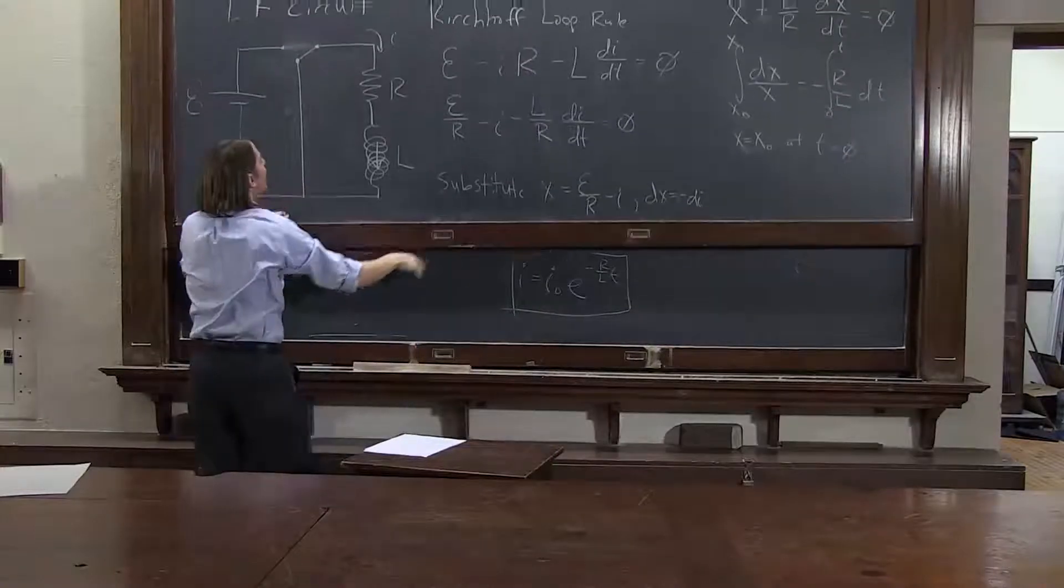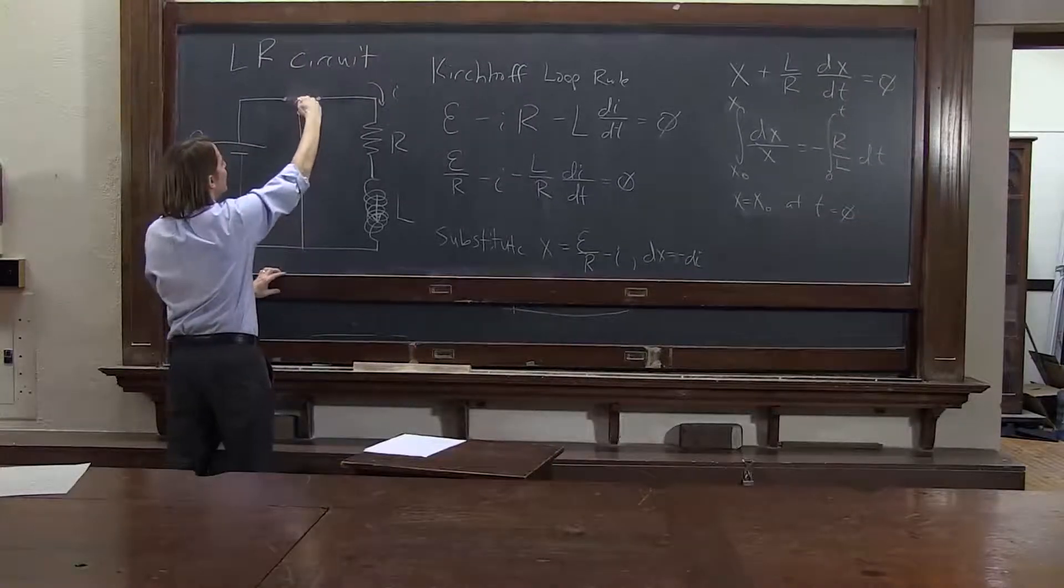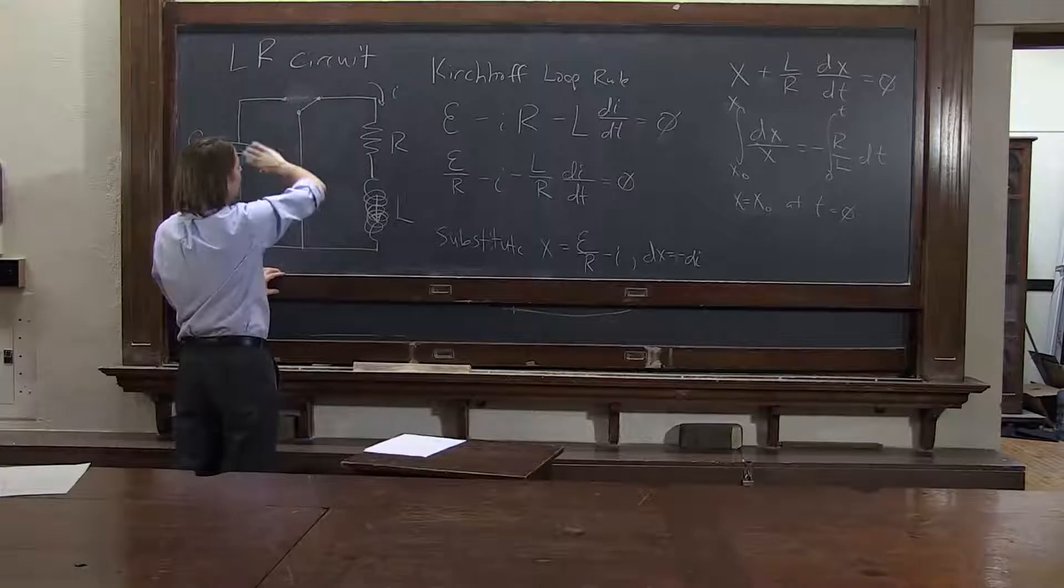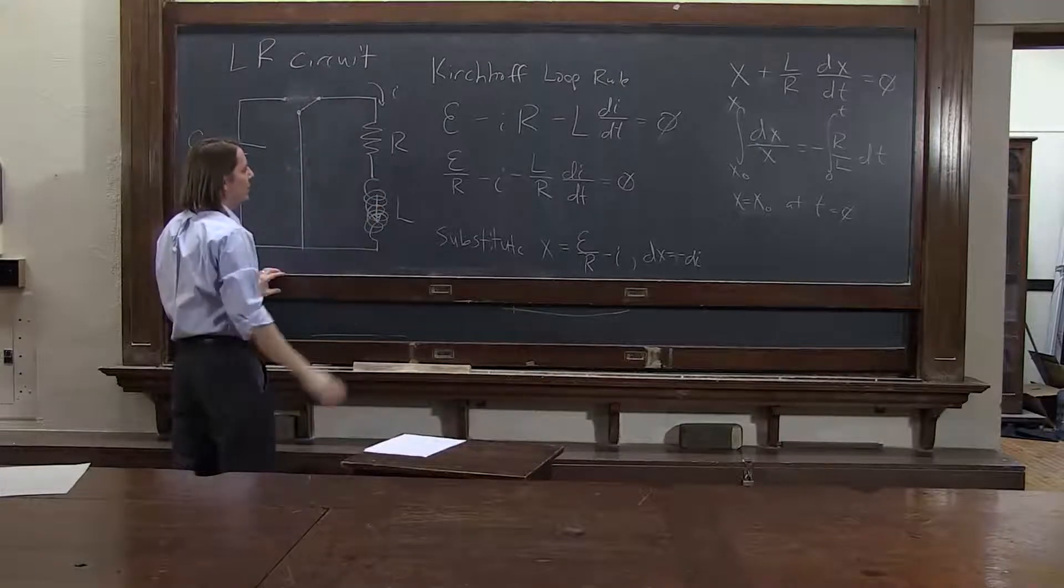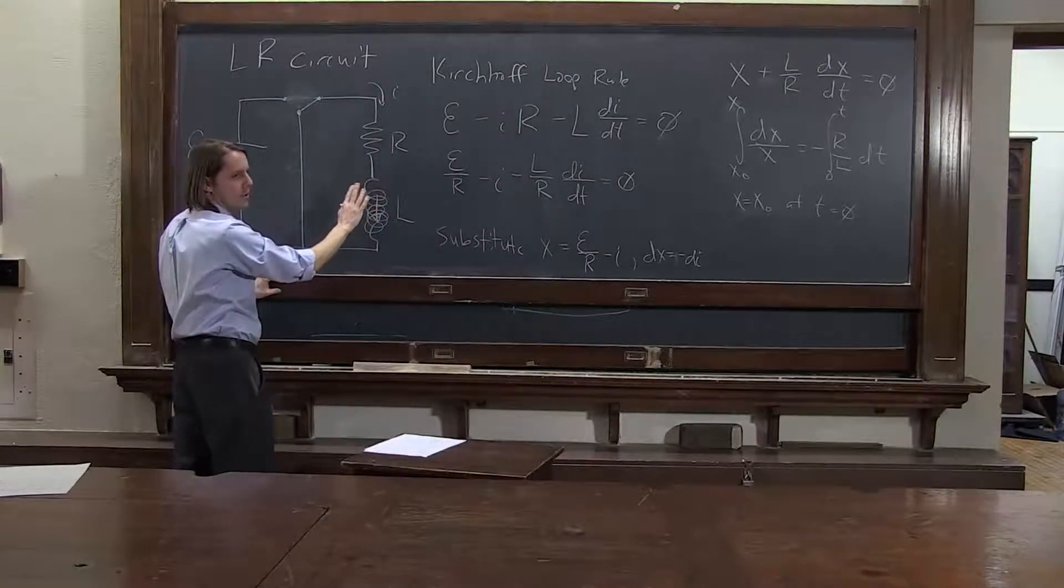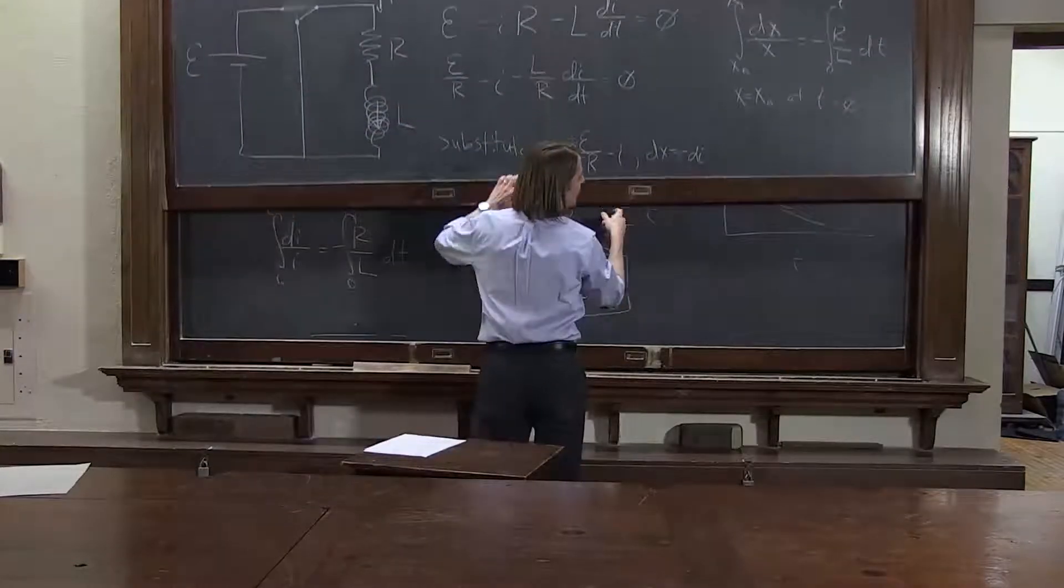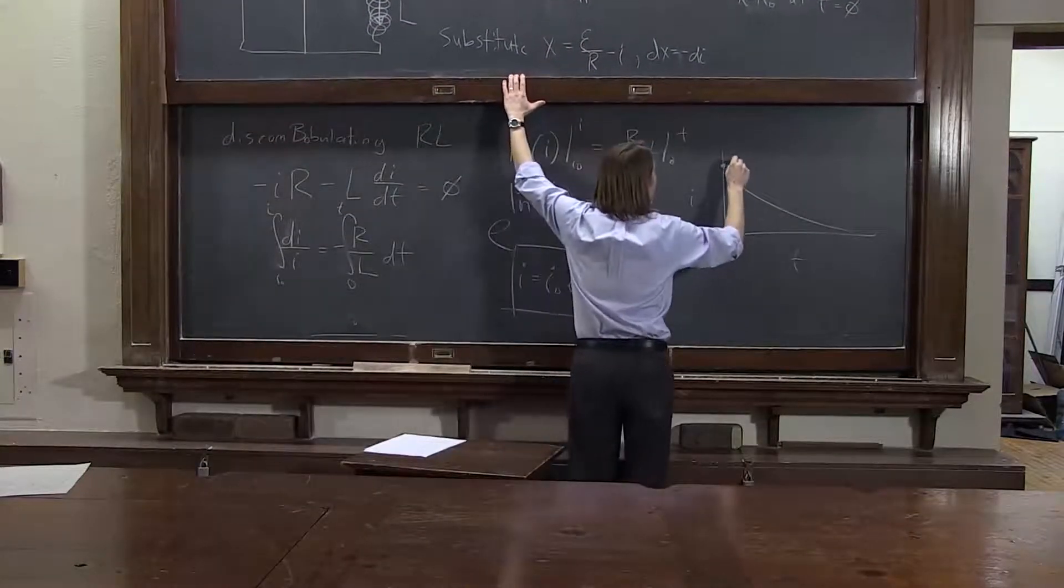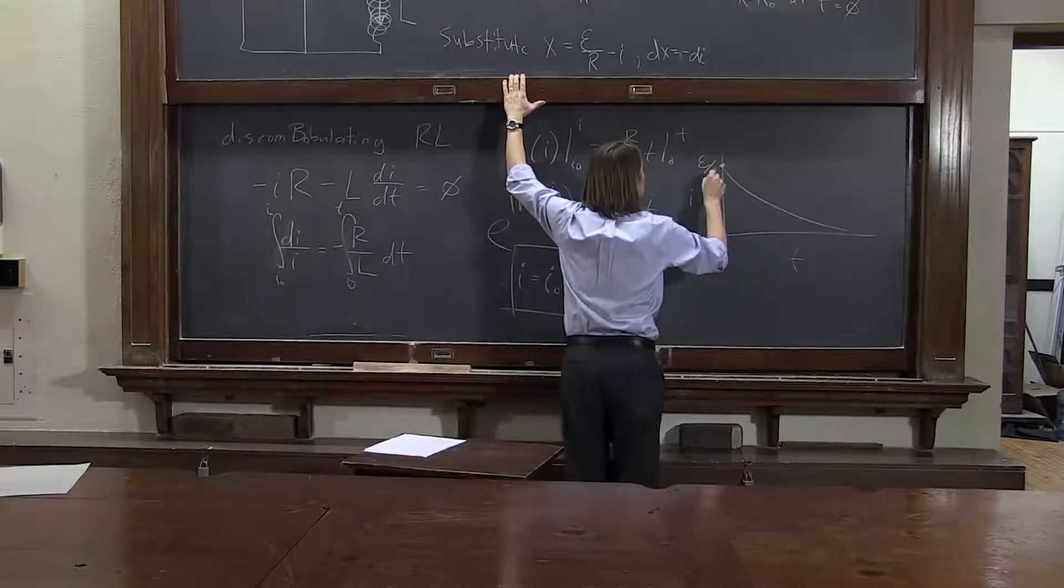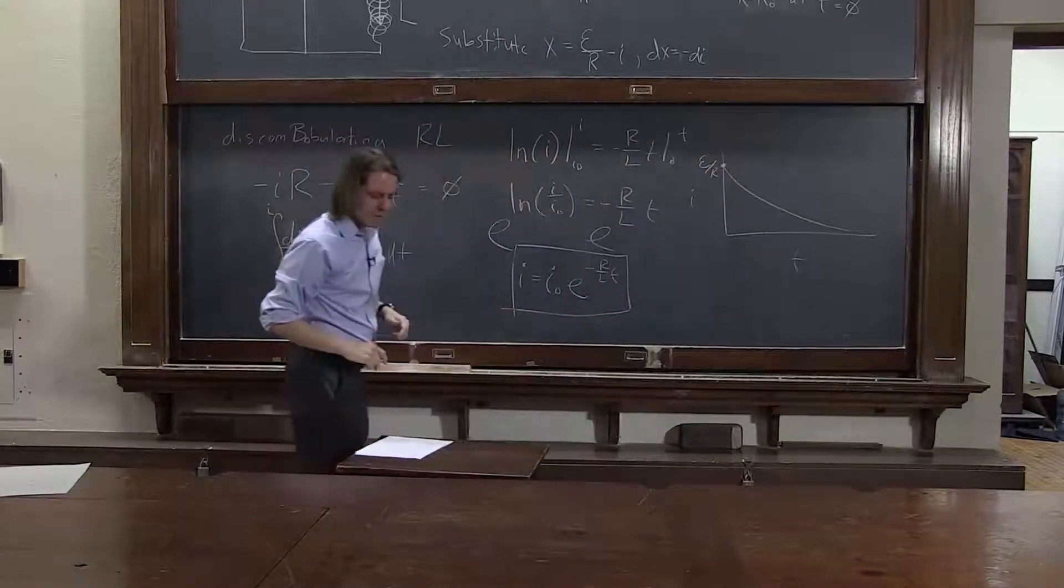That value i0, you can look at it and realize, oh well, when I first flipped it, the current was running as though the inductor weren't even there. All this potential drop was gone. So the current is just the emf over R. i0 is the battery's emf over R.